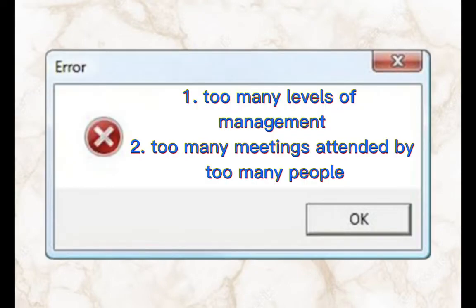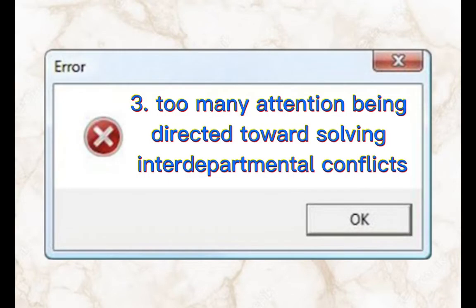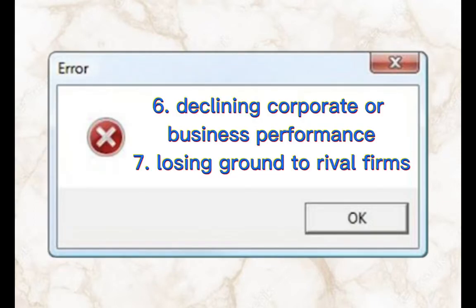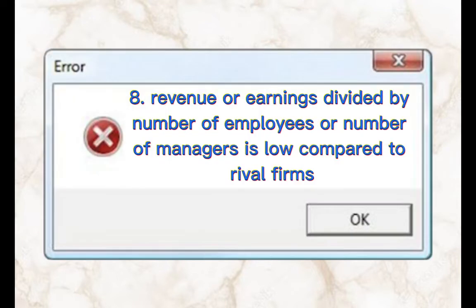One: too many levels of management. Two: too many meetings attended by too many people. Three: too much attention being directed towards solving interdepartmental conflicts. Four: too large a span of control. Five: too many unachieved objectives. Six: declining corporate or business performance. Seven: losing ground to rival firms. Eight: revenue or earnings divided by number of employees or number of managers is low compared to rival firms.